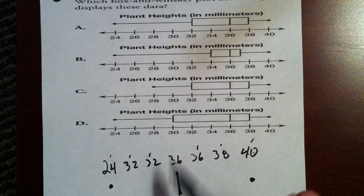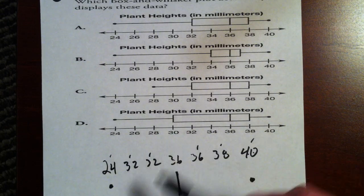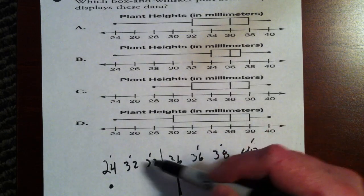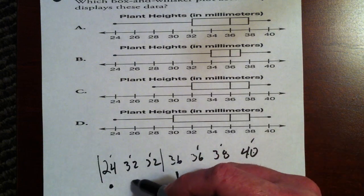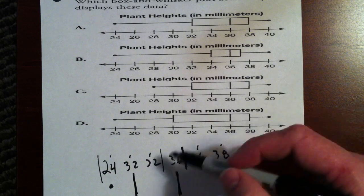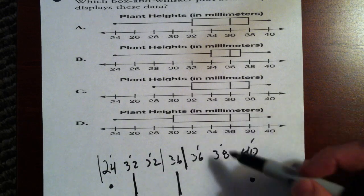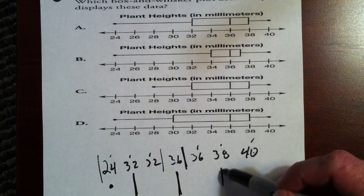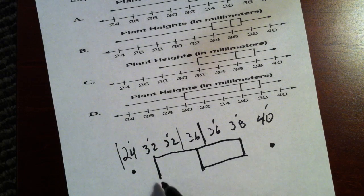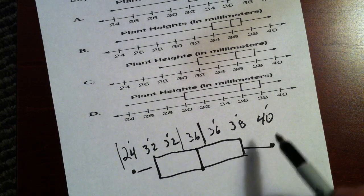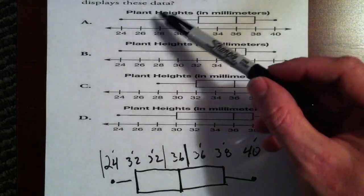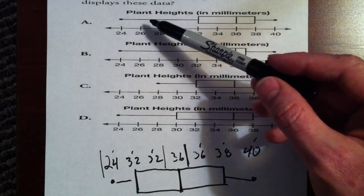Now, we also need the lower and the upper quartile for a box and whisker plot. Now, the lower quartile is nothing more than the median of the first half of the data. Well, in this case, it is the median of this, which is 32. Again, we don't count the median in that second half of data. So your upper quartile, in this case, is going to be 38. And basically, we're going to have a box and whisker plot that looks somewhat like this. Now, on a normal scale, it wouldn't be this even because we have different numbers. But the question is asking us, which box and whisker plot accurately displays these data?